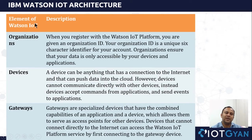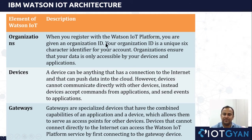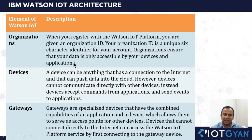Let's look into the elements of Watson IoT platform — these are the terms you must know. First is the organization. Whenever you register with the Watson IoT platform you are given an organization ID. Your organization ID is a unique six-character identifier for your account, and it ensures that your data is only accessible by your devices and your application.